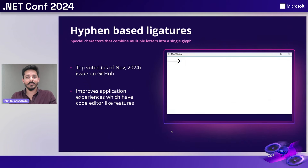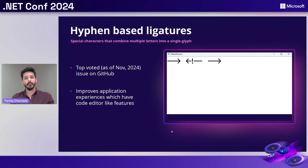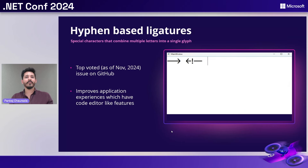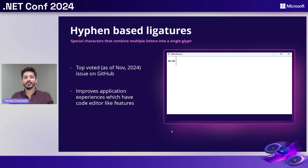The next feature is hyphen-based ligatures. Ligatures are special characters in your font that combine multiple characters to create a glyph. You must have seen this effect in modern code editors where a special font renders special characters differently, such as double equal-to negations, fat arrows, and comments. In WPF applications not on .NET 9, if your ligature had a hyphen in it, it wouldn't be rendered properly. In .NET 9, we got to fix that — it was the top-voted issue on GitHub. This helps you improve application experiences if you have code-editor-like features.